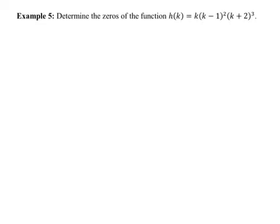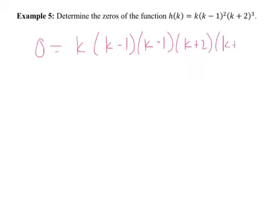The next example involves repeated factors. If we want to find the zeros, set the function equal to zero. We have (k minus 1) squared times (k plus 2) cubed times k. Writing it out explicitly: k minus 1 occurs twice, k plus 2 occurs three times, and k occurs once. So we'll have some double and triple roots. k minus 1 squared indicates a double root; k plus 2 cubed indicates a triple root.